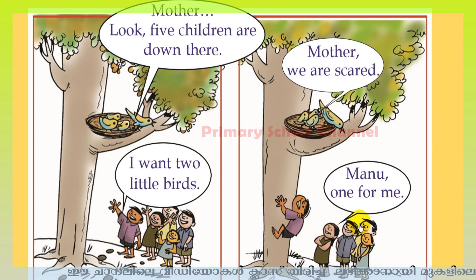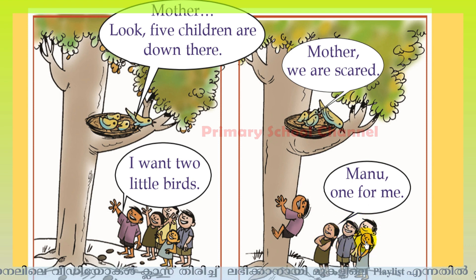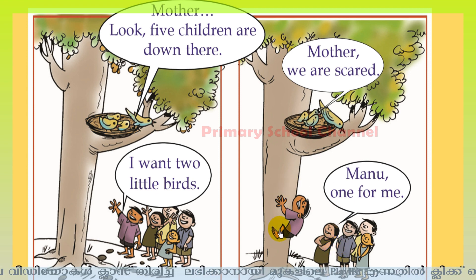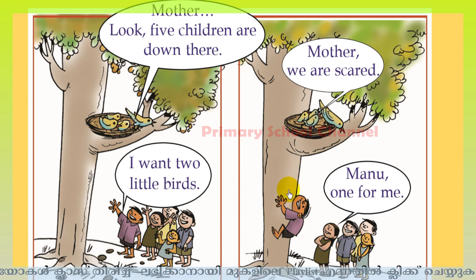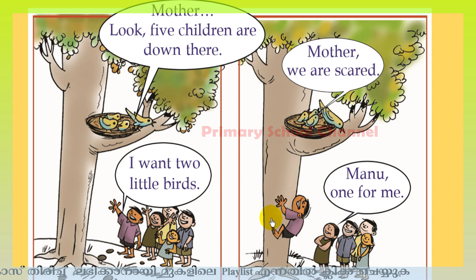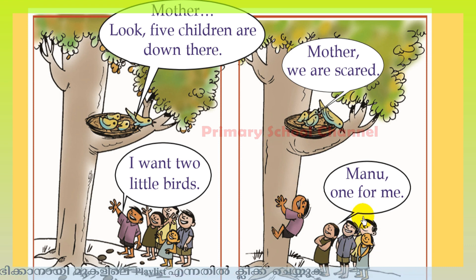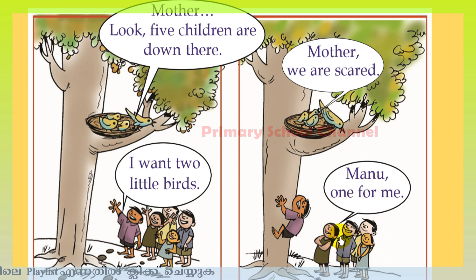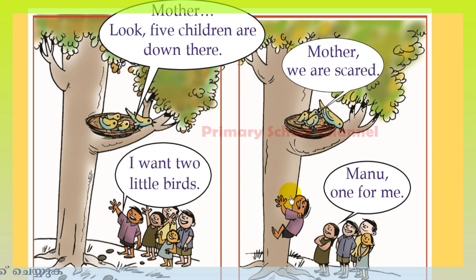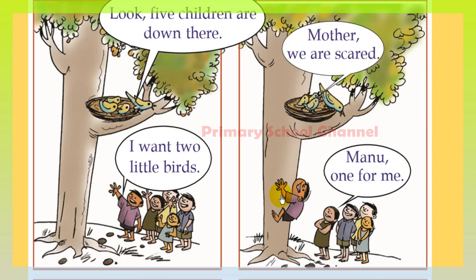How many children are down here? One, two, three and four — four children. How many on the tree? One. This is Manu. Manu is on the tree, and the other four children are under the tree. One for me.